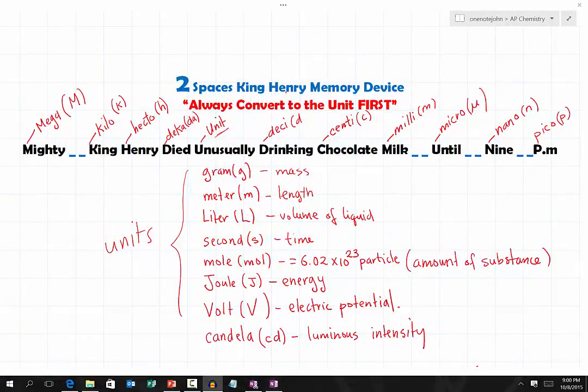In this lesson we are going to learn a memory device that allows you to memorize all the exponential values of the common prefixes used with SI units. The name of this device is called the 'Two Spaces King Henry' memory device — notice two spaces — so it involves King Henry with two spaces. Here is the memory device.